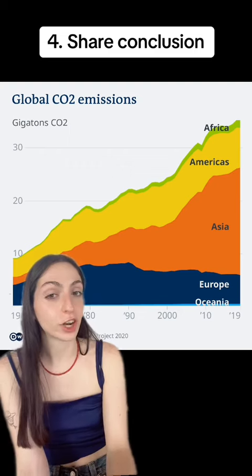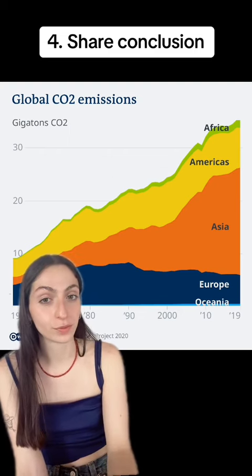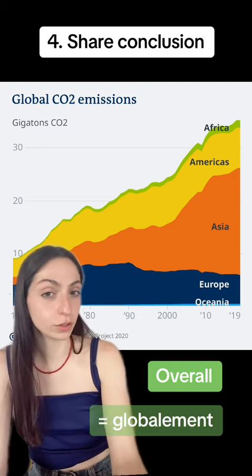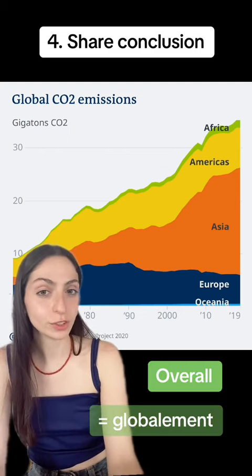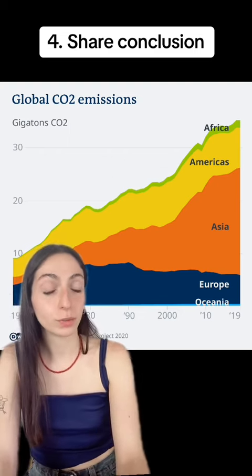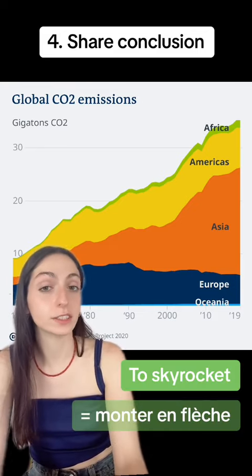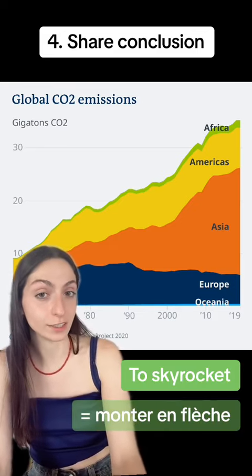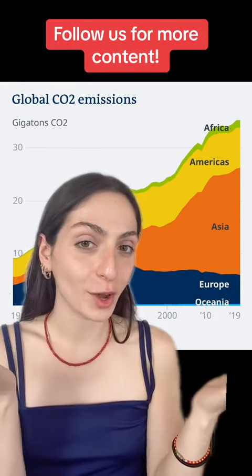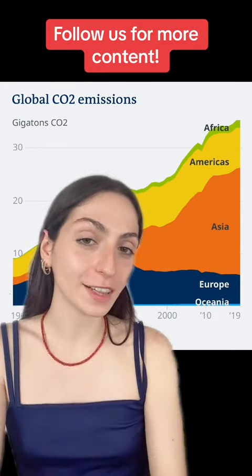Finally, you have to share a conclusion. Overall, the graph shows that the CO2 emissions in the world have skyrocketed since the 1960s. Now you know how to present a graph in English.